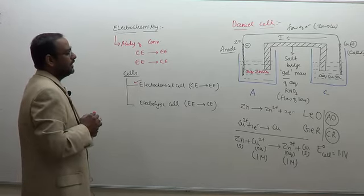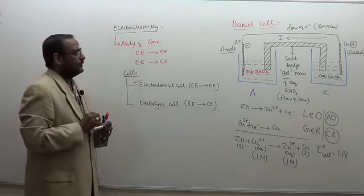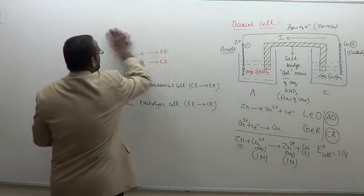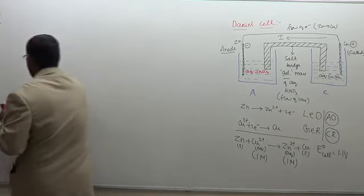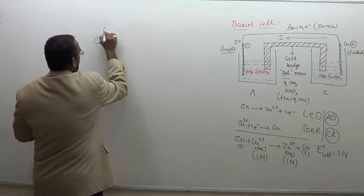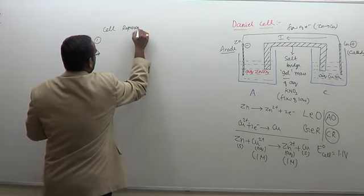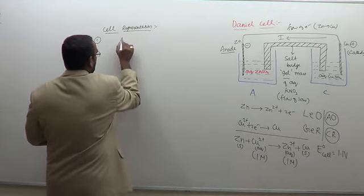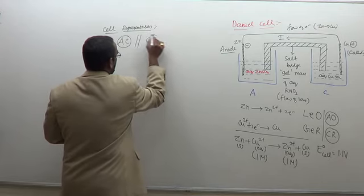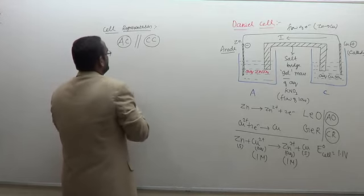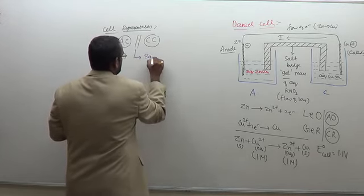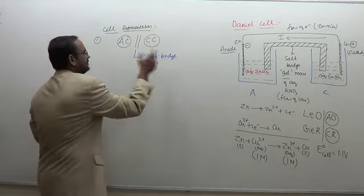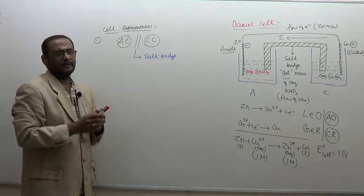Before going to single electrode potential, we need to understand the concept of cell representation. IUPAC — the International Union of Pure and Applied Chemists — has given a standard representation for cells. The anode compartment is written on the left hand side and the cathode compartment on the right hand side, separated by a double vertical line. This double vertical line represents the salt bridge, which separates the two compartments.